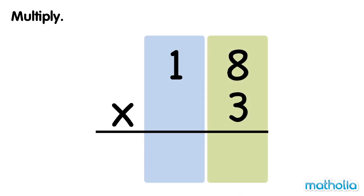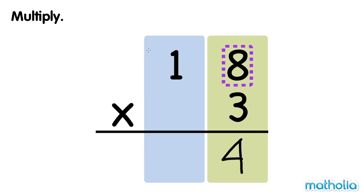Multiply. Let's find 18 times 3. First, multiply the ones by 3. 8 ones times 3 equals 24 ones. Regroup 24 ones into 4 ones and 2 tens.